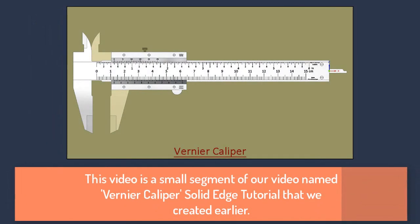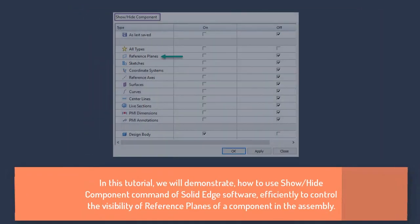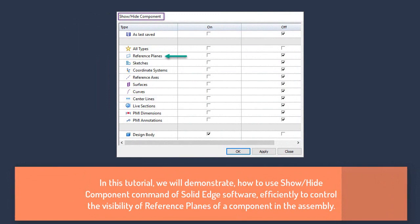This video is a small segment of our video named Vernier Caliper Solid Edge tutorial that we have created earlier. In this tutorial, we will demonstrate how to use the Show/Hide component command of Solid Edge software efficiently to control the visibility of reference planes of a component in the assembly.